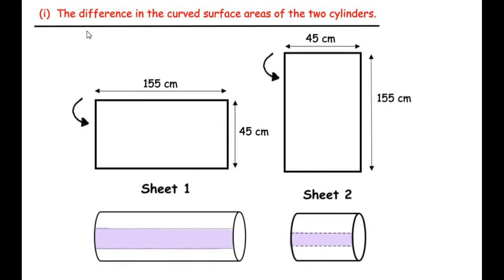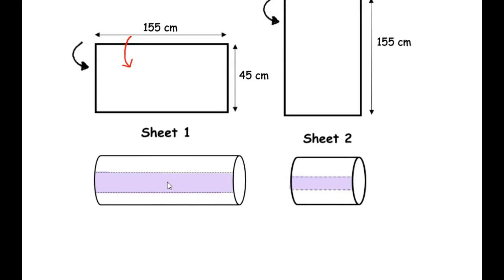Let us start with the first part: the difference in the curved surface areas of the two cylinders. I have redrawn the two sheets and shown how the rectangular sheet looks when rolled into a cylinder. The purple shaded region is the 1cm overlap when you roll the sheets. This overlapping area is in the form of a rectangle. For sheet 1, the length of this rectangle is 155cm and the width is 1cm, so the overlap area is 155 × 1 = 155 cm².